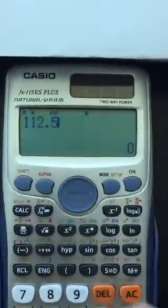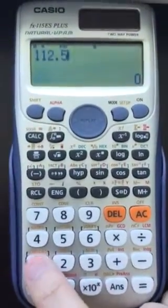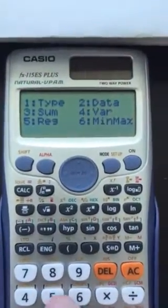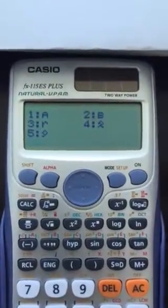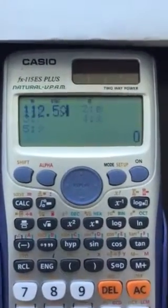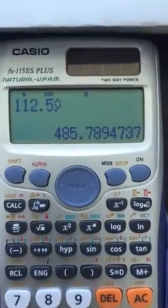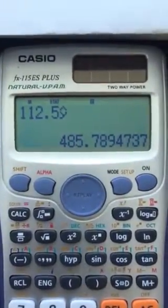So we would input the value, we would press shift, stat, which is number 1. This is a linear regression, and we're solving for y in the format that was inputted into the calculator, and we have a stopping site distance of 485.78 feet.